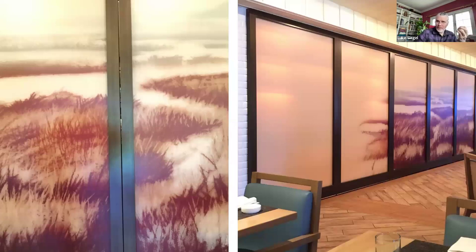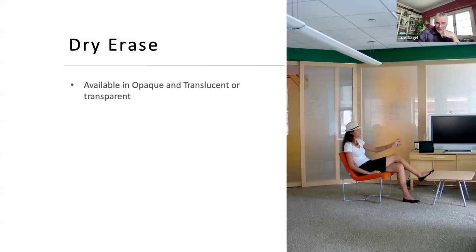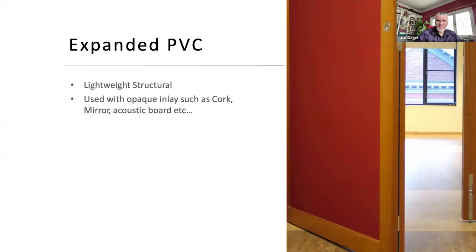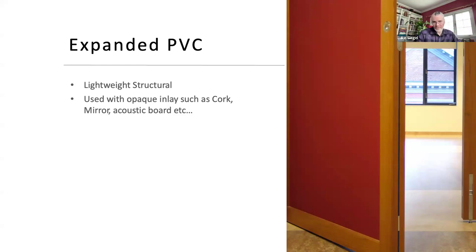Here's an example of the charcoal drawing encapsulated between two sheets of polycarbonate that we saw earlier. Dry erase is also available — not a lot to say except it can be done on clear, translucent, or opaque, and is often specified for commercial projects. Expanded PVC essentially replaces the decorative structural core with a quarter-inch expanded PVC, which is very strong and lightweight. It allows for applications of cork, mirror, acoustic board — anything you want to lay onto the face. It keeps the weight down but remains structural. The photo here is an example of cork used for team meetings and pinup designs.